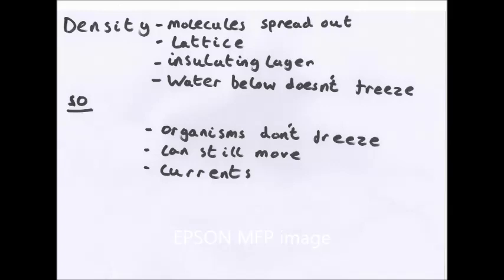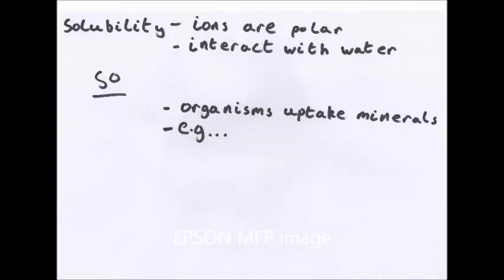Firstly, density. As we've said, molecules spread out into a lattice structure, which forms an insulating layer on top of the water, so the organisms below don't freeze. Now, these are the key bits. This is how the organisms survive. Water doesn't freeze, so the organisms don't freeze. They can still move, and currents allow flow of nutrients. So, that's the reasons why it does it and how it helps the organisms.